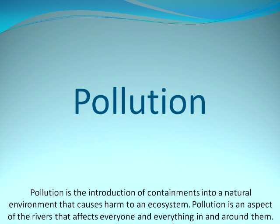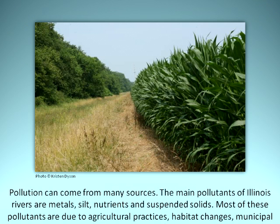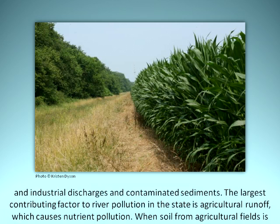Pollution is the introduction of contaminants into a natural environment that causes harm to an ecosystem. Pollution is an aspect of the rivers that affects everyone and everything in and around them. The main pollutants of Illinois rivers are metals, silt, nutrients, and suspended solids. Most of these pollutants are due to agricultural practices, habitat changes, municipal and industrial discharges, and contaminated sediments.